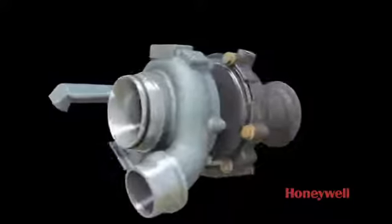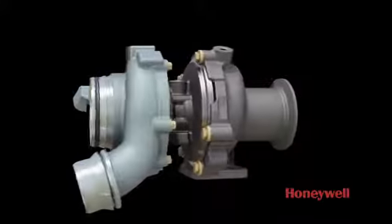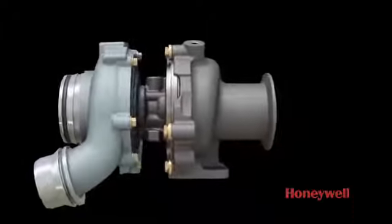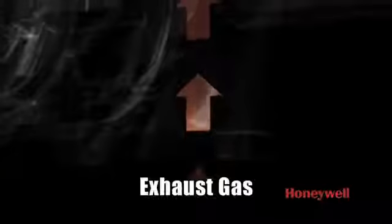To get more air into the engine, a turbocharging system starts with an engine's exhaust gas, power that is essentially wasted in non-turbo engines. This exhaust gas is channeled to the turbo, where it spins a turbine wheel.